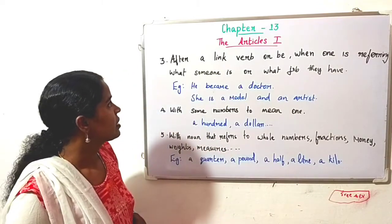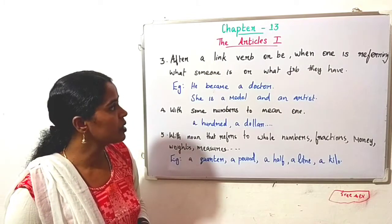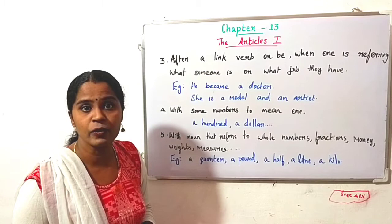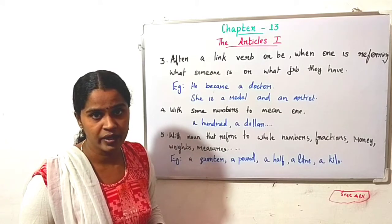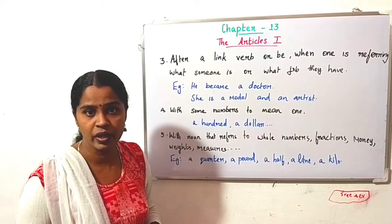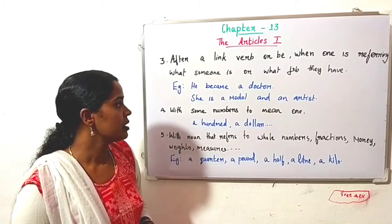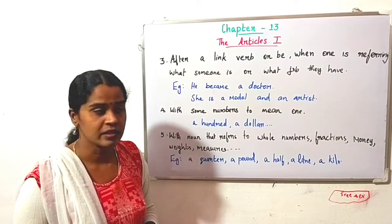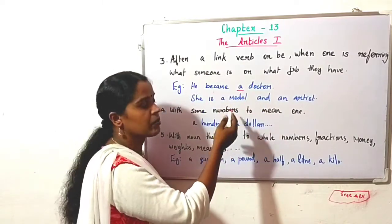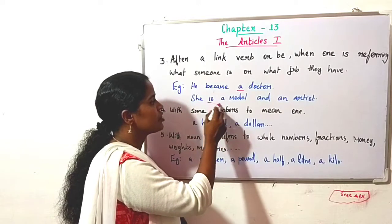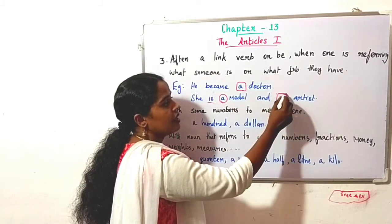Third rule: after a linking verb or 'be', when one is referring to what someone is or what job they have, we can use 'a' and 'an'. See the examples: He became a doctor. Then, she is a model and an artist. Here we have used to denote he is a doctor. She is a model and an artist.